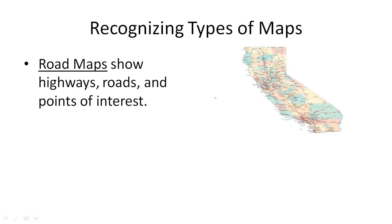Road maps are maps you might use if you were going on a trip, if you were going on a drive. These are the maps that show you where highways, roads, and points of interest are.